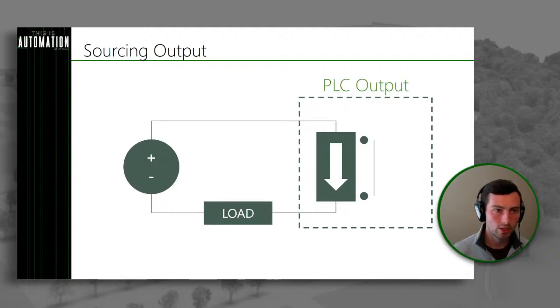So to quickly recap: the two that are probably the most important for you to know are sinking input and sourcing output. With a sinking input, we are taking current in and sinking it to ground. And with a sourcing output, we're sourcing current out — we're providing a voltage source — which makes a lot of sense because we're an output, so it makes sense that we're sourcing current.